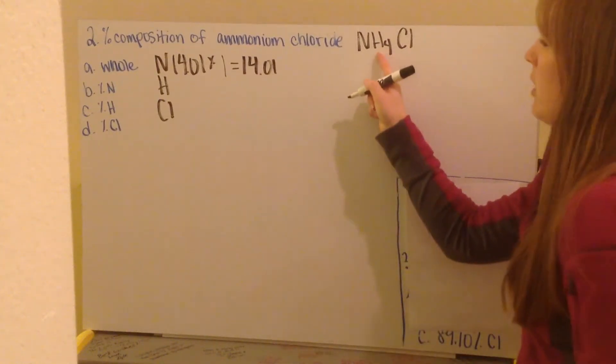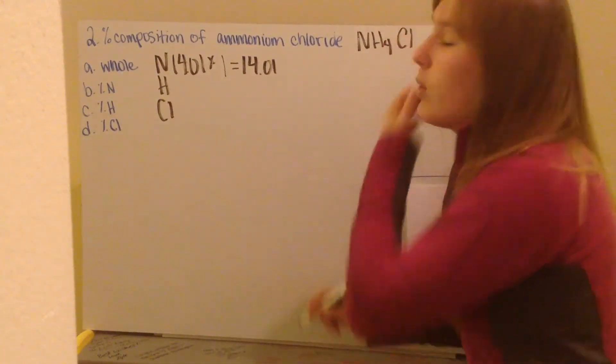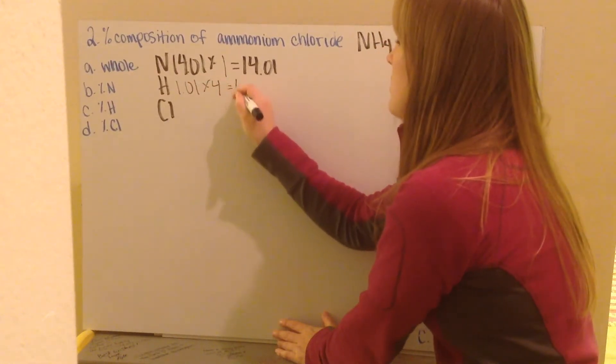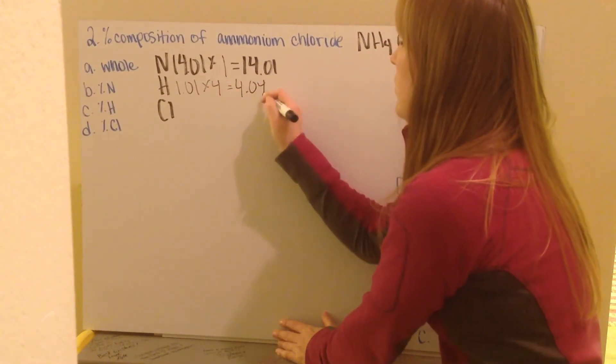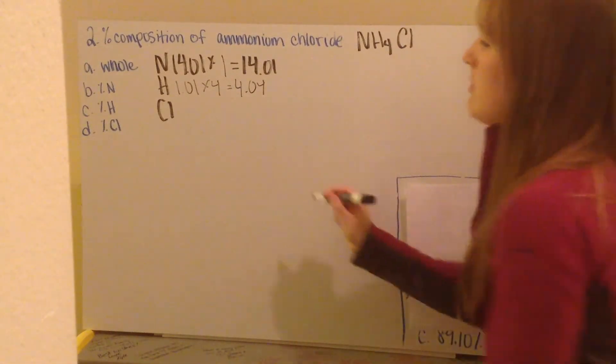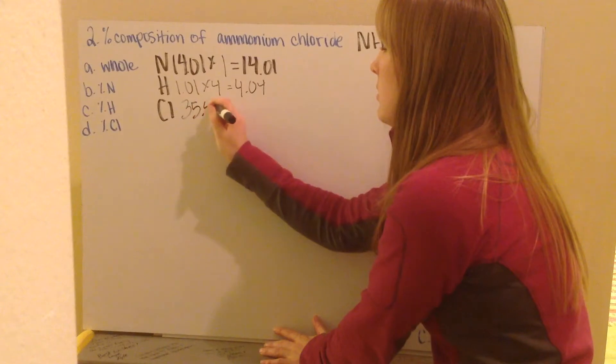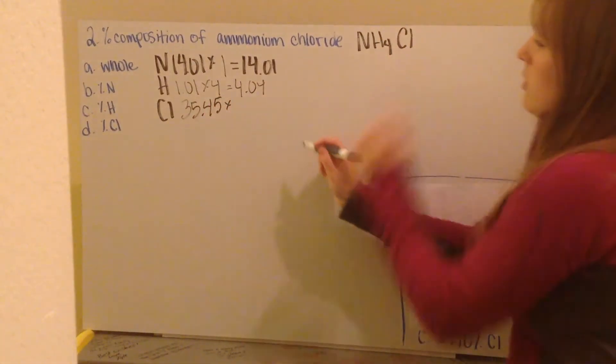My hydrogen, I have 4 hydrogens. Hydrogen has a mass of 1.01, which gives me 4.04. And then my chlorine has a mass of 35.45, and I have one chlorine.